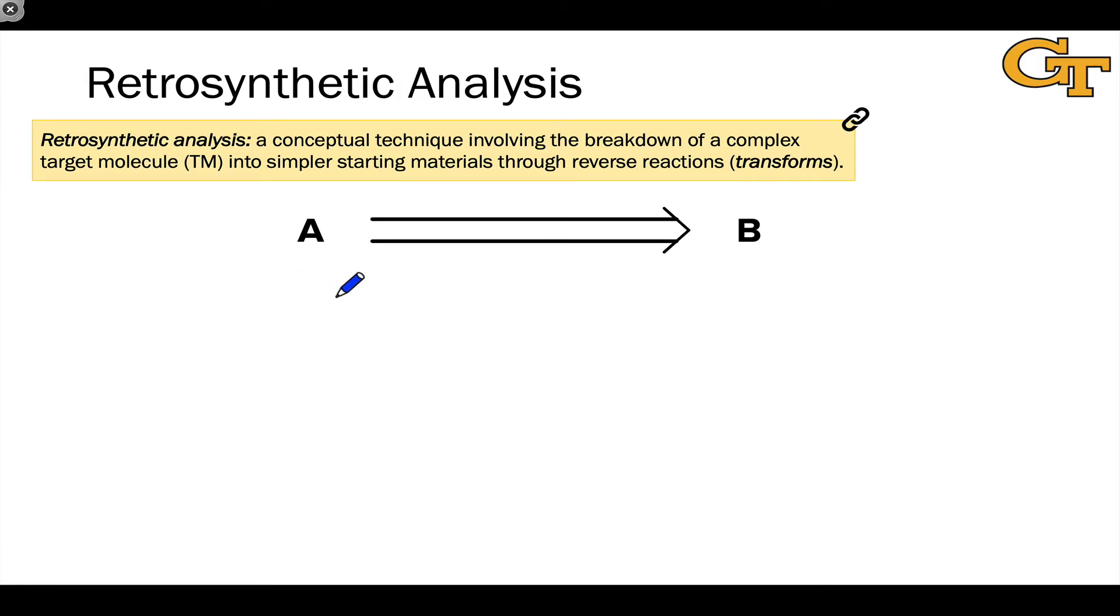The basic problem of organic synthesis involves starting with a molecule that's relatively complex that we want to make. We call this the target, here labeled as A. And figuring out how we can construct or synthesize A from a set of simpler starting materials, B.